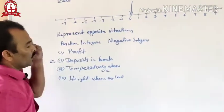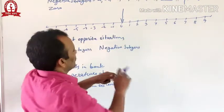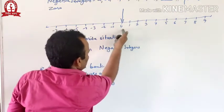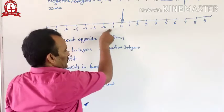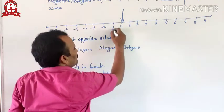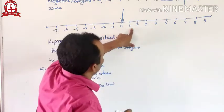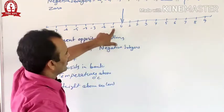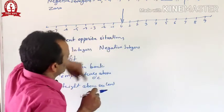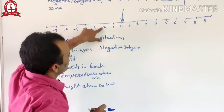Here we say: what is the opposite of one? The distance from zero to one — the opposite is zero to minus one. So we say the opposite of one is minus one, and the opposite of minus one is one. Similarly, the opposite of two is minus two.